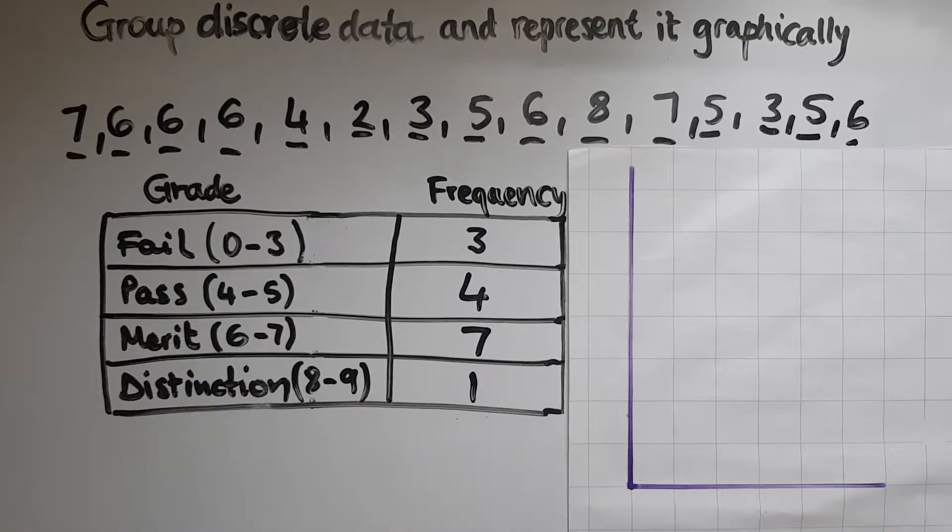So in this graph, I'll have these different groups. So we have fail, we have pass, merit and distinction.